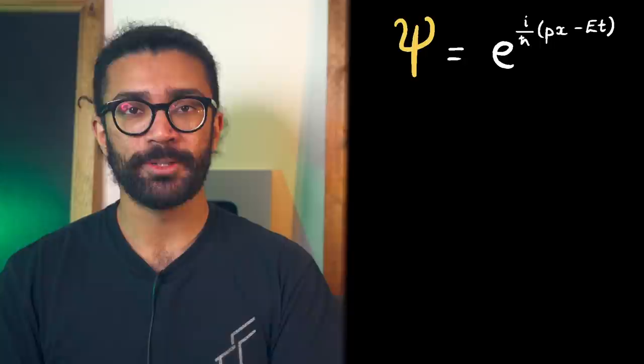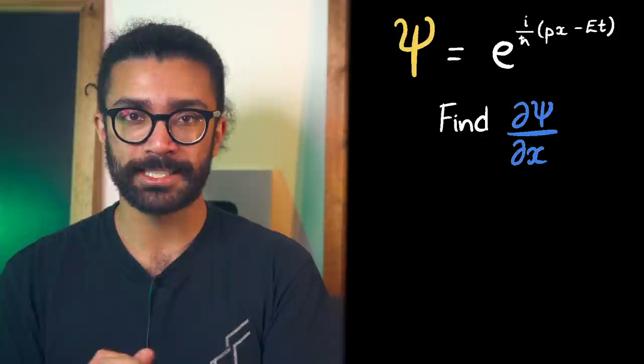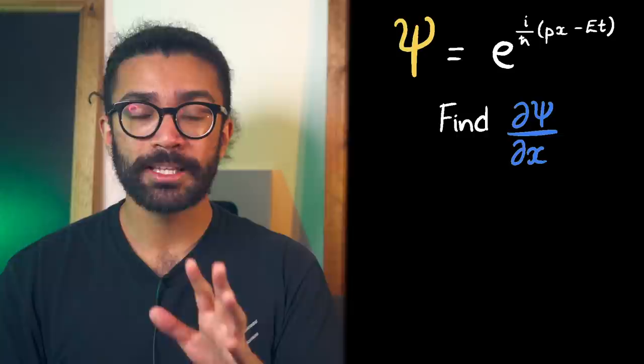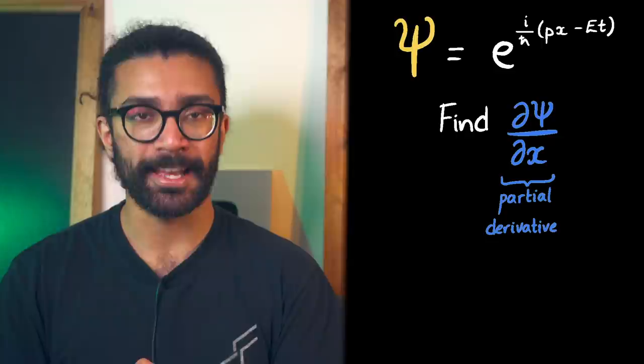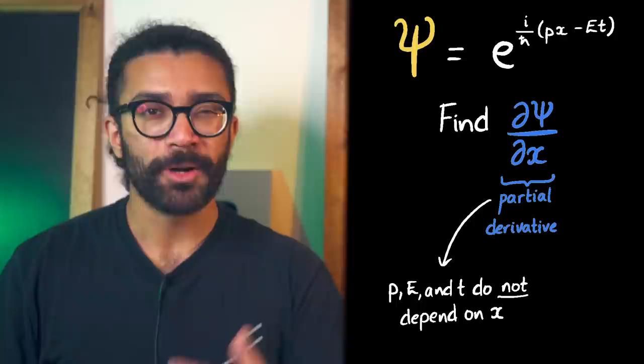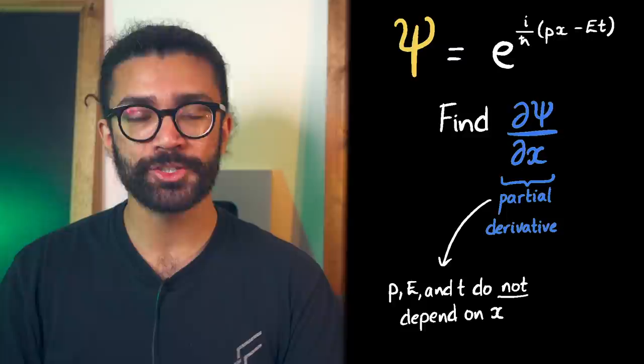Now, for those of you familiar with differentiation, we can find the derivative of this wave function with respect to x. Don't worry if you don't know what differentiation is, I'll talk about that in a minute. But for now, let's say that we're finding the partial derivative of this wave function with respect to x. This means that we assume nothing else apart from x depends on x. Partial differentiation is an interesting idea that isn't necessarily taught when you first learn about differentiation, even though it's mathematically easier, it's conceptually more difficult.